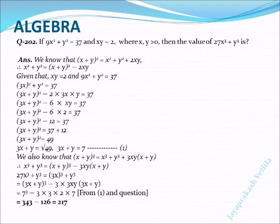Next, we have to find 27x³ + y³. We know that (x + y)³ = x³ + y³ + 3xy(x + y), so x³ + y³ = (x + y)³ - 3xy(x + y). Here, 27x³ + y³ = (3x)³ + y³, which can be written as (3x + y)³ - 3 × (3x) × y × (3x + y).